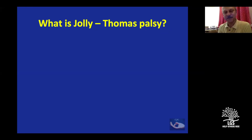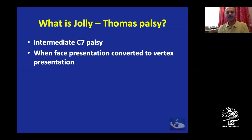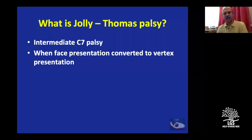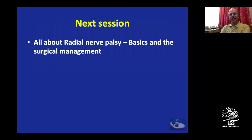Jolly Thomas palsy is an intermediate brachial plexus palsy — Erb's palsy is C5-C6, Klumpke's palsy is C8-T1, and the intermediate C7 palsy is quite rare and does not manifest much on its own. It usually occurs when face presentation is converted in obstetric palsy, and is called an intermediate C7 palsy.